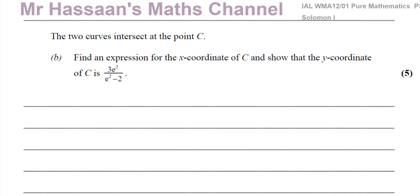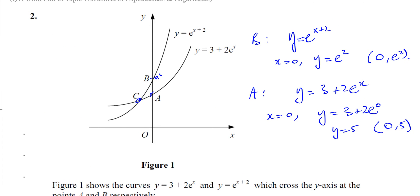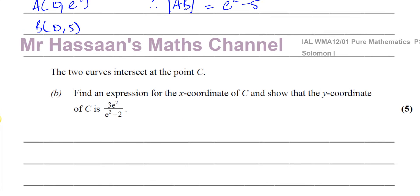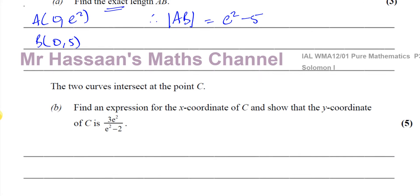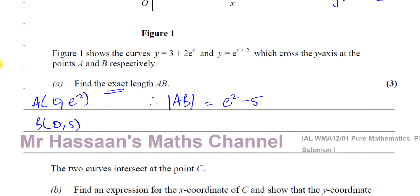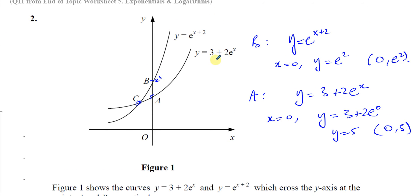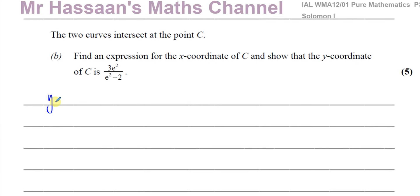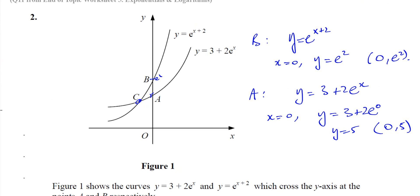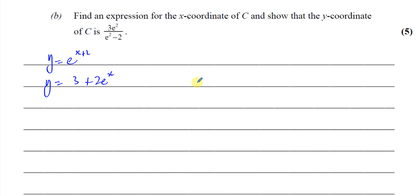The two curves intersect at point C. We need to find an expression for the x-coordinate of C and show the y-coordinate of C is 3e² over (e²−2). To find where they intersect, we solve the two equations simultaneously. We have y equals e to the power of x plus 2, and y equals 3 plus 2e to the power of x. Substituting, we get e to the power of x plus 2 equals 3 plus 2e to the power of x.